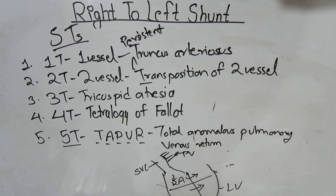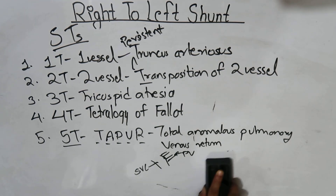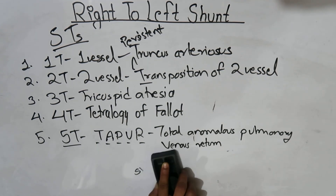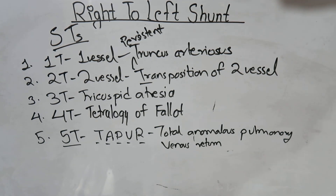So these are the five conditions where we can find right-to-left shunting of the heart. Thank you.